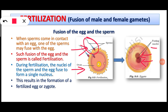We can say that the nucleus of the zygote contains genes from both the mother and father. This is why, when the zygote divides and undergoes cell division to develop into an embryo, and the embryo develops into a baby, the baby will have the features of both parents.